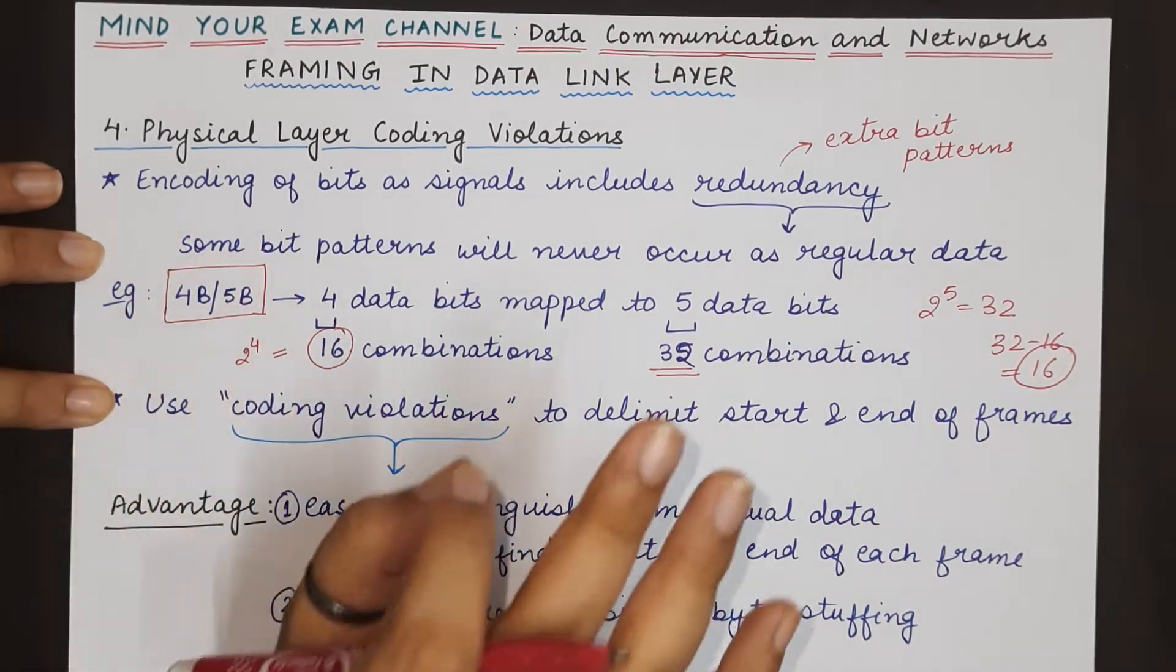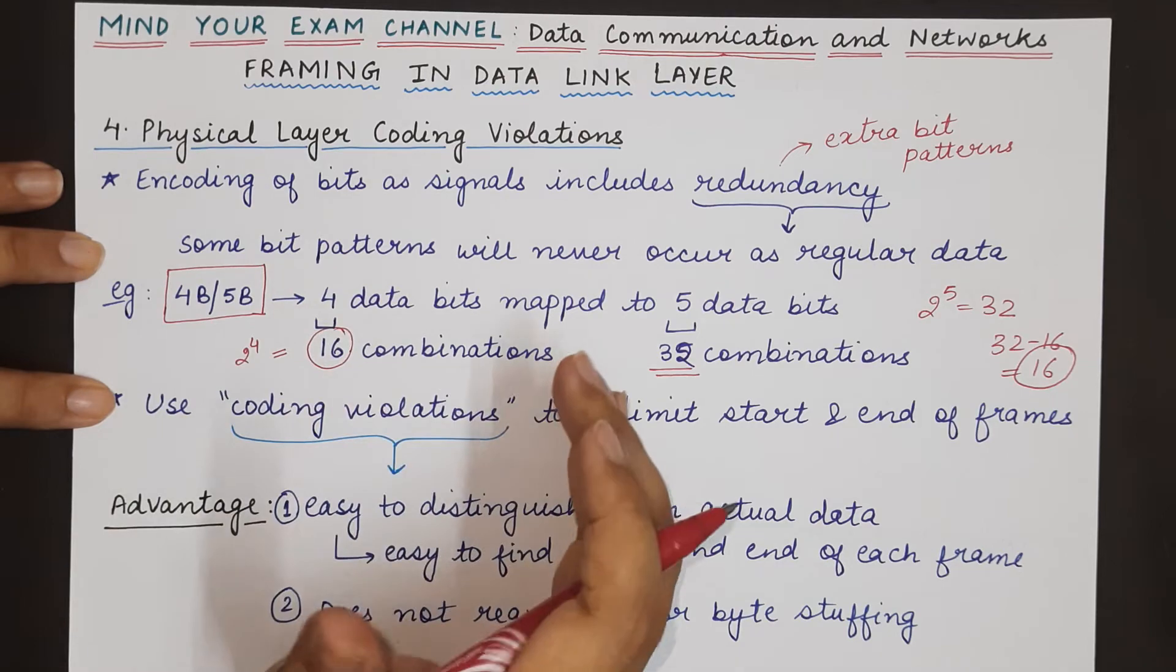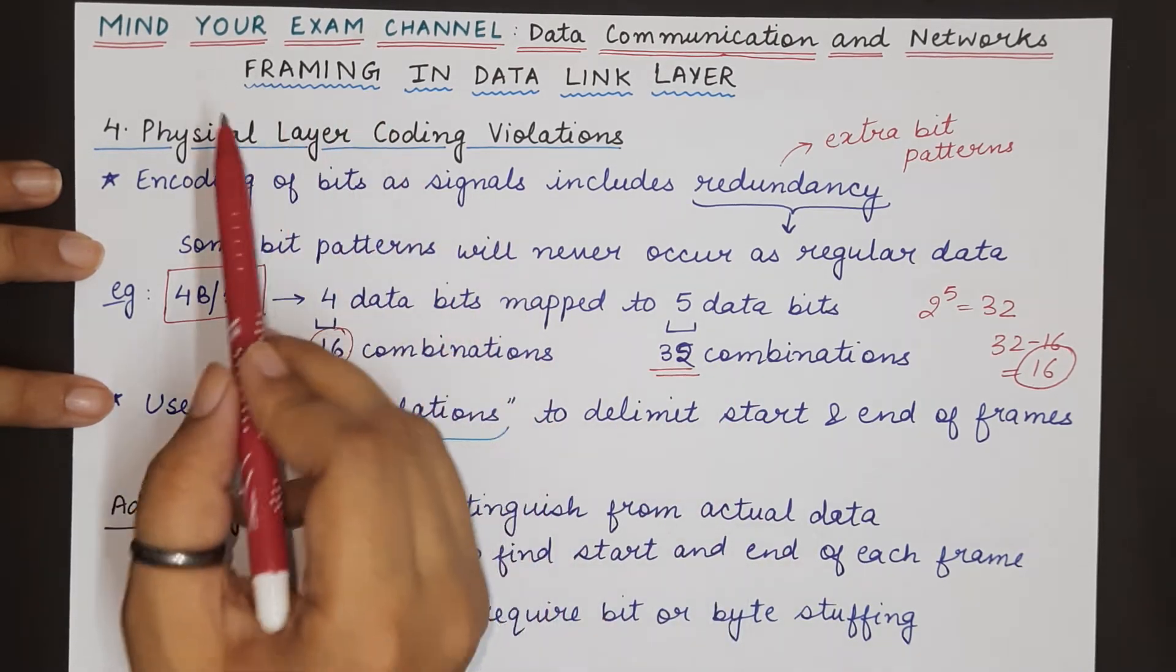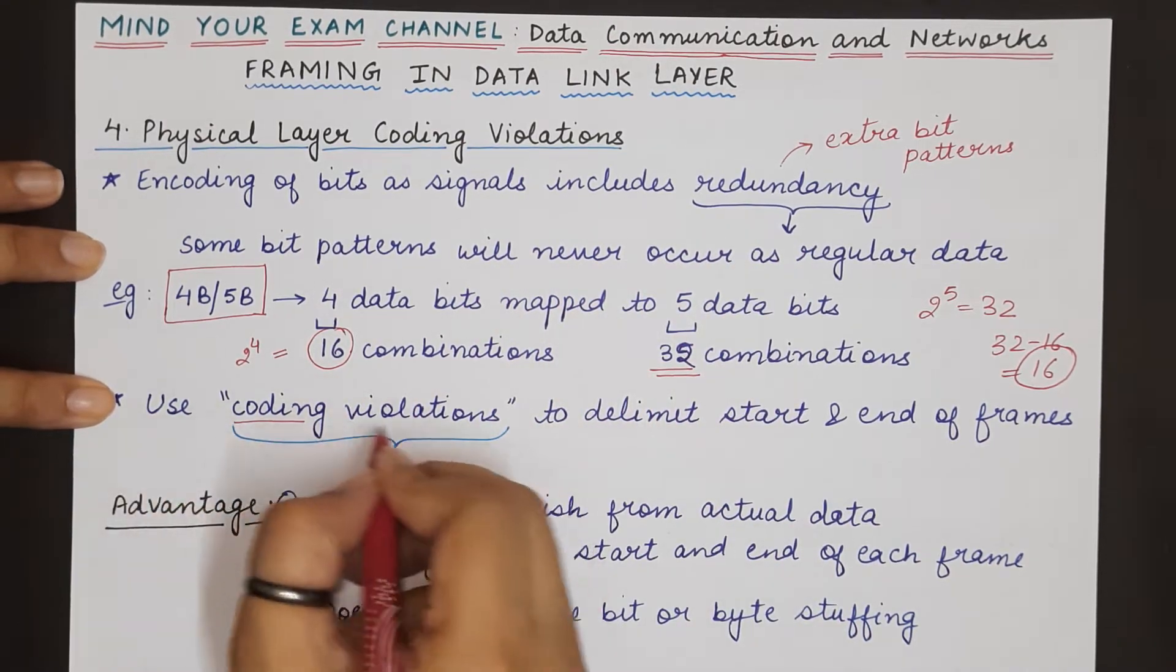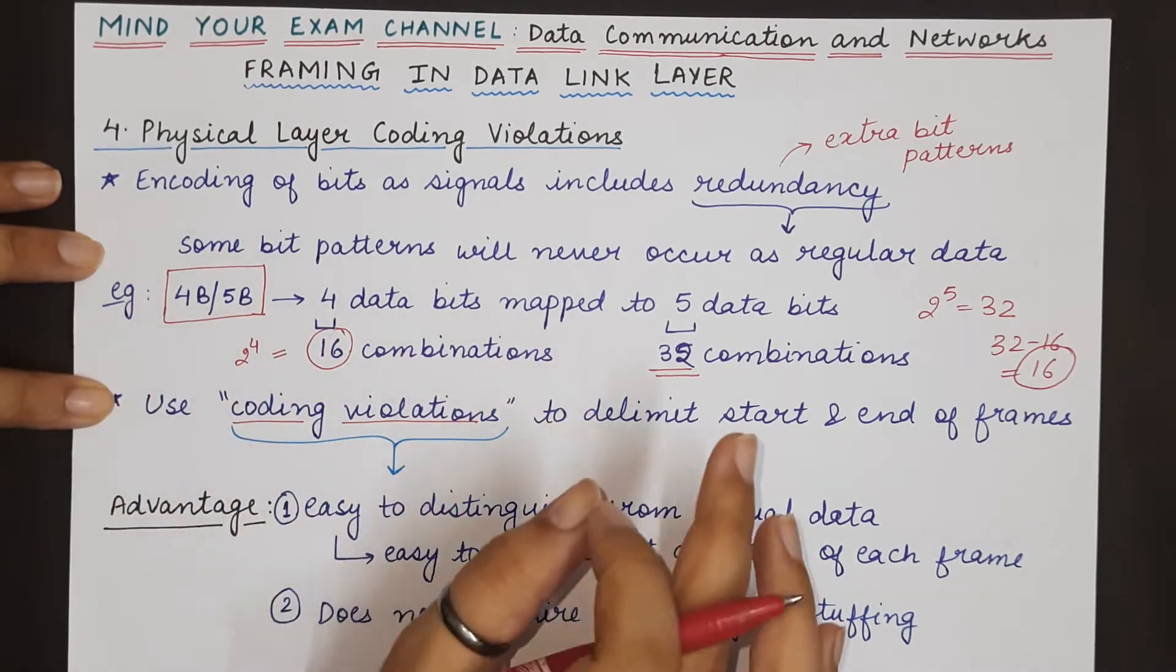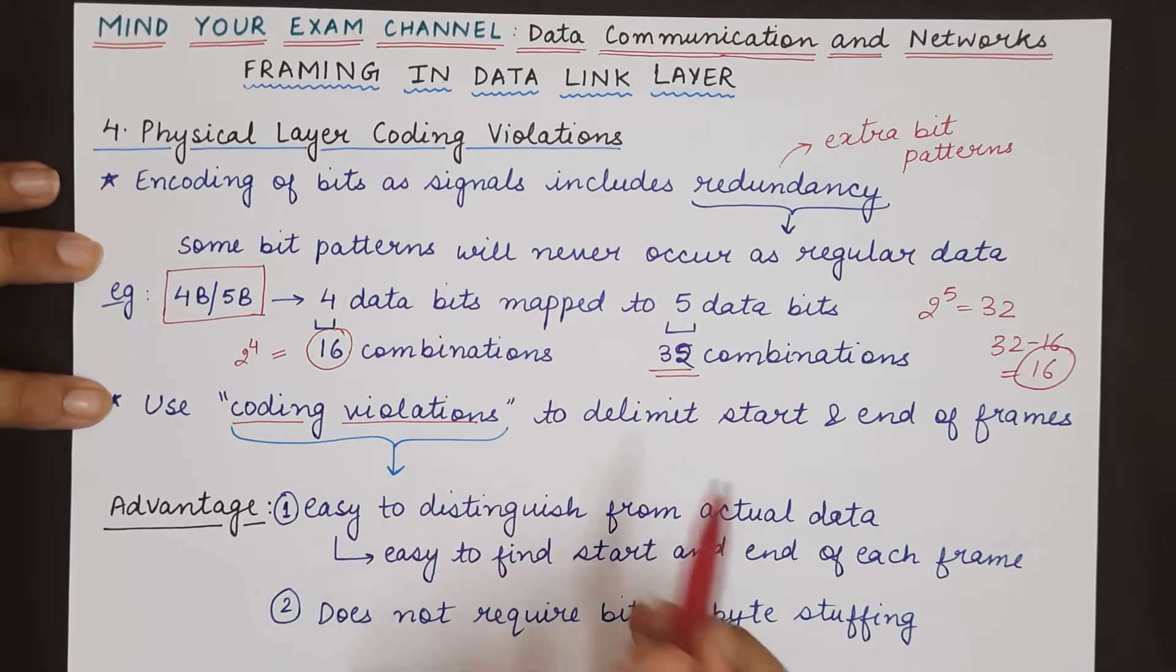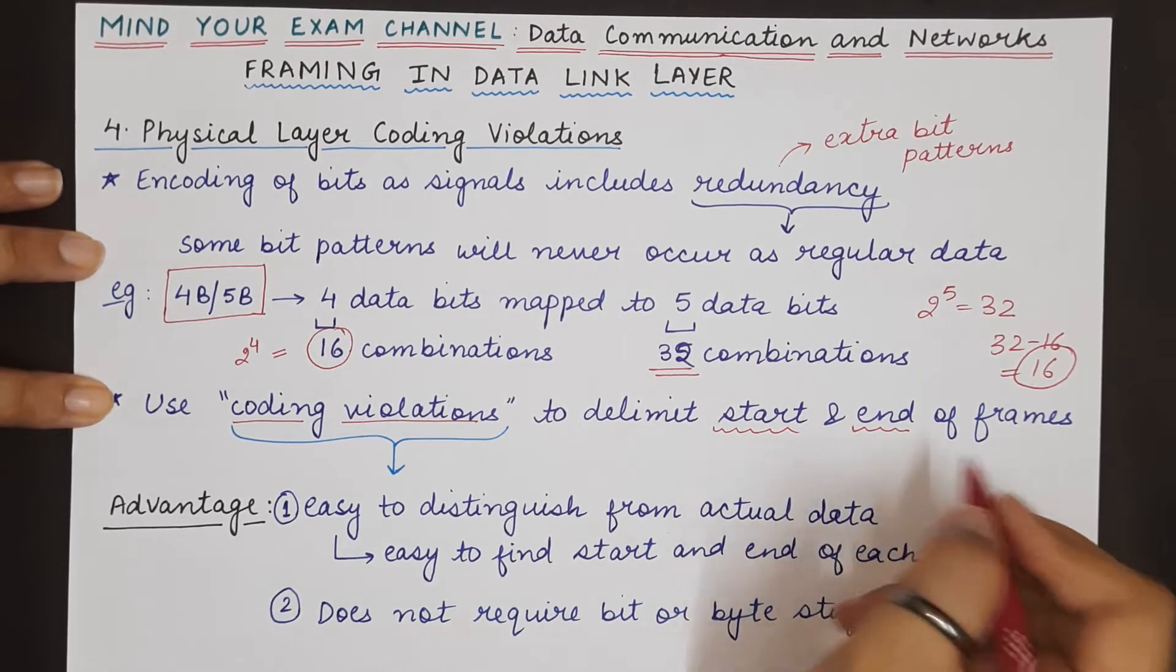This means that these redundant bit patterns can be used for other purposes. Now one of that purpose is to represent the starting and ending of the frame, and that is why we say the coding violations. That means those bit patterns which if represented as data at the physical layer would have been a violation can now be used at the data link layer to perform framing, to delimit or to mark the start and end of the frames.